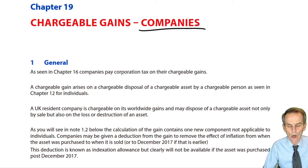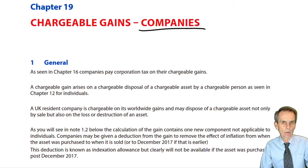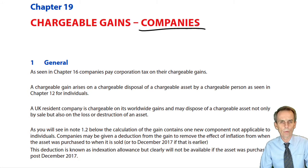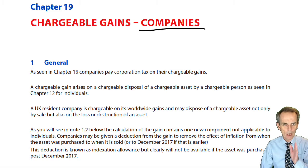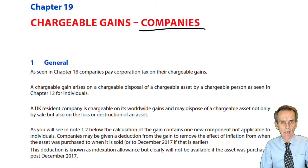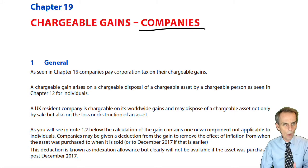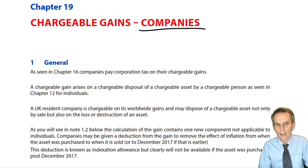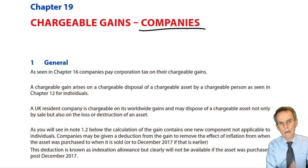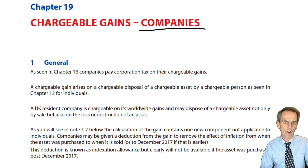Individuals paid capital gains tax on their capital gains. That is not the case with companies. Companies are not separately charged to CGT in relation to their gains. As you will know from Chapter 16, the introduction to the corporation tax computation, companies are taxed on their worldwide income and gains. So companies pay one taxation on their total profits, and those total profits include both the different sources of income — most notably trading — but also any chargeable gains.